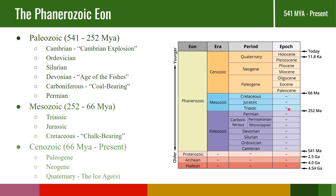Despite being a time in Earth's history that we know a lot about, and where a lot of important things in the history of life happened, the Phanerozoic is only the last little bit—the last 500 or so million years of Earth's history. The Cenozoic, where we're in now, is about 66 million years, a very small fraction of Earth's history.